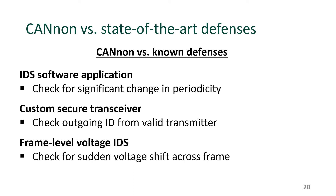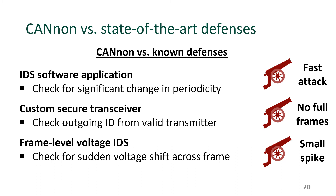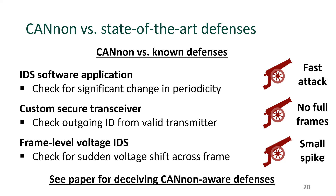We now pit CANNON against three defenses used by state-of-the-art techniques that successfully detect other shutdown attacks. First, we build an IDS software application that checks for a significant change in message timing. Another defense we tested was building our own custom secure transceiver that checks the ID of any outgoing messages. Finally, we build a frame-level voltage IDS that looks for a sudden shift in voltage in the middle of the frame. CANNON does well against these — it attacks very fast within a single period, it doesn't use full frames so there's no outgoing ID to block, and it only induces a small voltage spike during the victim frame. We also asked whether a software IDS could simply be updated to detect the CANNON attack. Unfortunately, we think it would be difficult for a software IDS to differentiate between this attack and a true fault on an ECU. In our paper, we go over ideas on how this attack can deceive even CANNON-aware defenses, forcing a defense solution to exist not only as software.